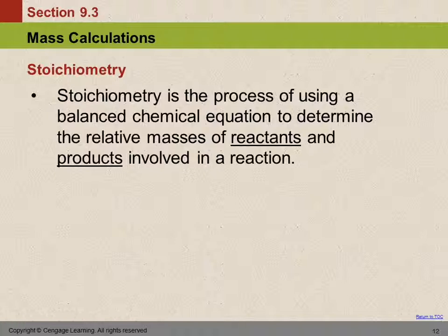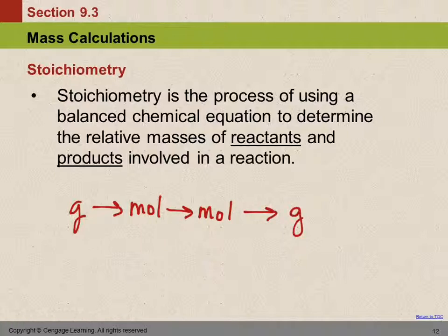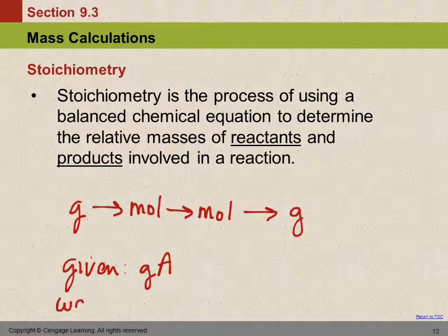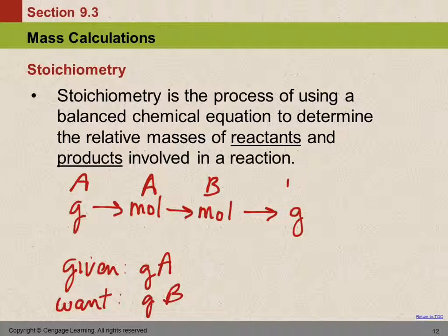Here is what I consider the big picture of stoichiometry: grams to moles to moles to grams. If we're given a mass of A—grams of some element or reactant or product—and we want grams of B, the path is: grams of A to moles of A to moles of B to grams of B.